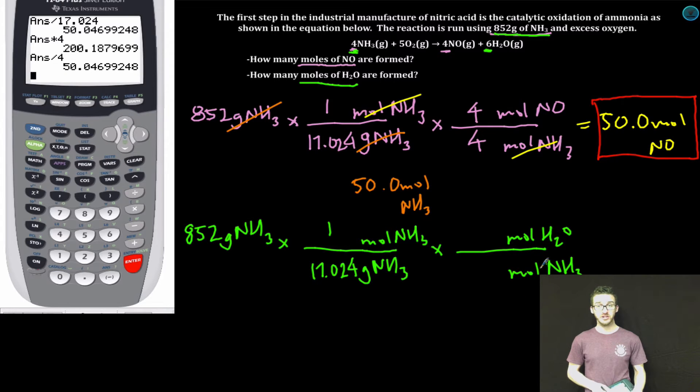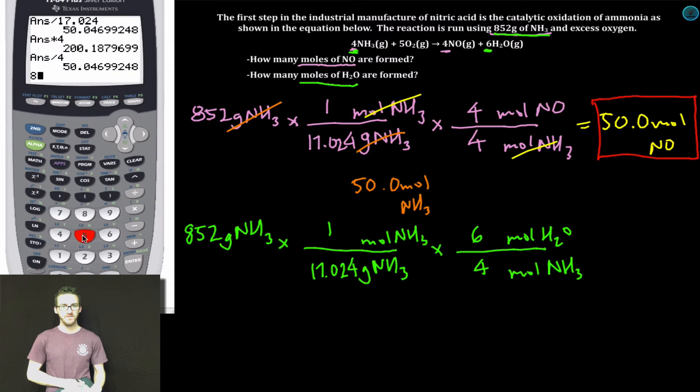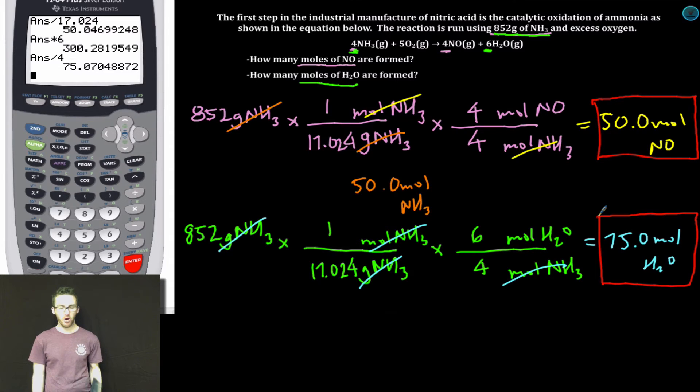As I complete this final conversion factor, my relationship between H2O and ammonia is 6 to 4. Calculator time, I get 75.0 moles H2O. I have correct number of sig figs. All the units that I don't want cancel out. And importantly,